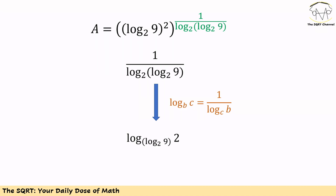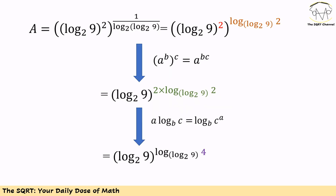Remember, 1 over log of B in base C can be written as log of C in base B. Using this, the exponent can be simplified as log of 2 in base log 9 in base 2. Now, when we have A to the power of B and then the whole expression to the power of C, we can simplify it as A to the power of BC. Using this trick, we have log of 9 in base 2 to the power of the expression shown in green.